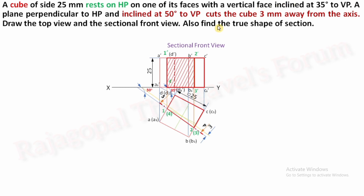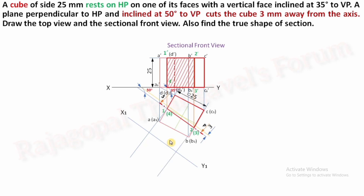Now the last step is to find the true shape of section. We have to draw one more plane of projection parallel to the section plane. This also makes 50 degrees with respect to XY, parallel to the section plane — mark it as X1Y1. Now draw perpendicular projectors from each cutting point. The perpendicular projector must be 90 degrees from X1Y1. Points 1 and 4 are on the same perpendicular projector, and points 2 and 3 are also on the same perpendicular projectors.